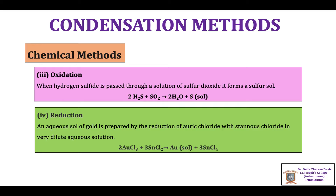The last chemical method is reduction. An aqueous sol of gold is prepared by the reduction of auric chloride with stannous chloride in very dilute aqueous solution. This is the opposite of oxidation. In auric chloride, the oxidation state of gold is +3, and gold is reduced to the 0 oxidation state, resulting in the formation of the gold sol.